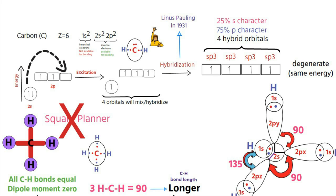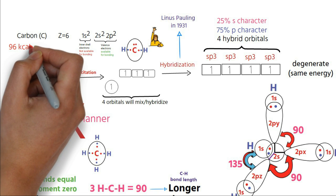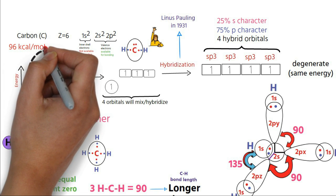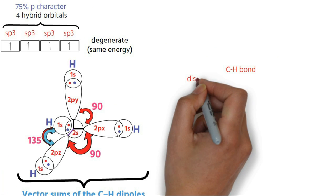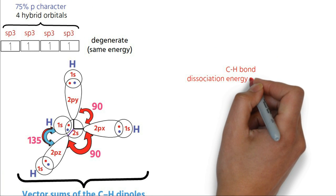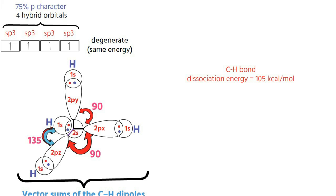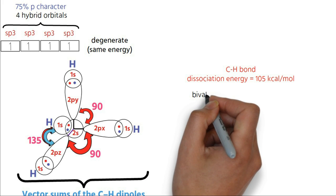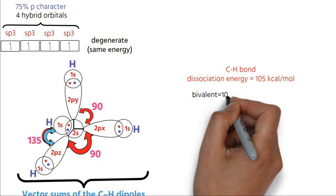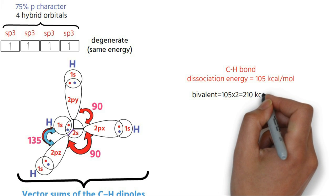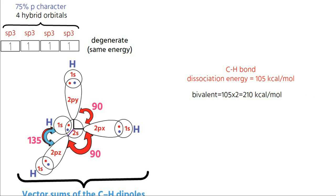The promotion of electron from lower energy 2s orbital to higher energy 2p orbital requires 96 kilocalories per mole of energy. The bond dissociation energy of a single CH bond is 105 kilocalories per mole. If the excitation didn't occur, carbon would remain bivalent and could form only two covalent bonds, which would release only 210 kilocalories per mole.